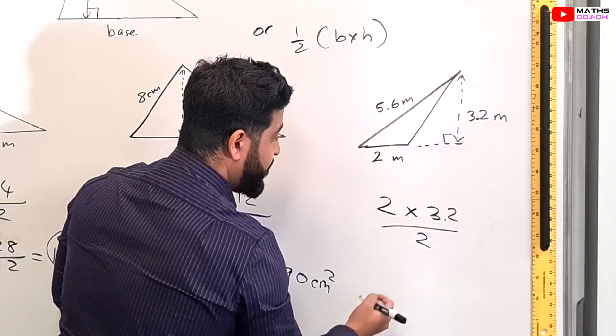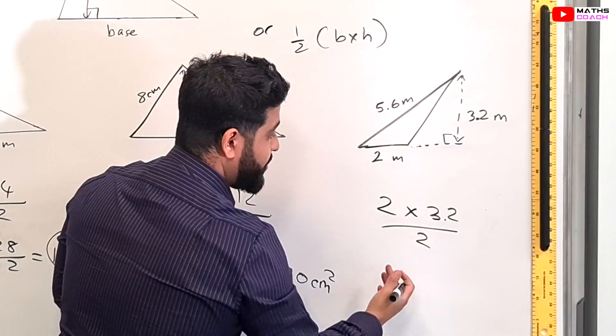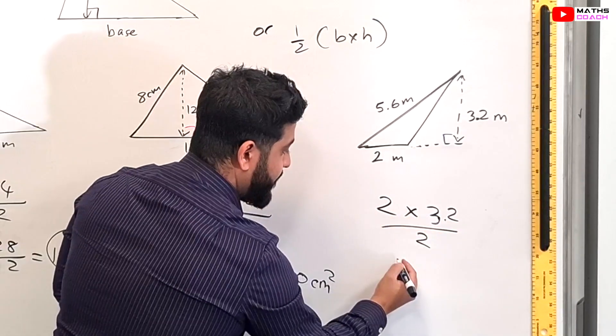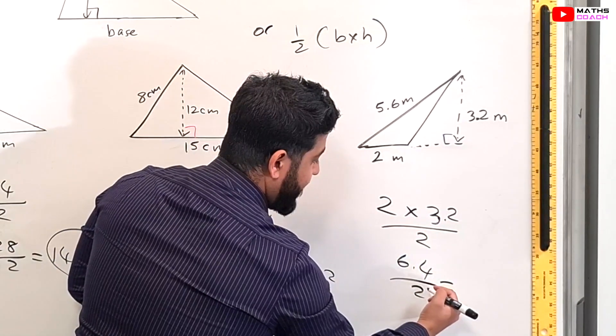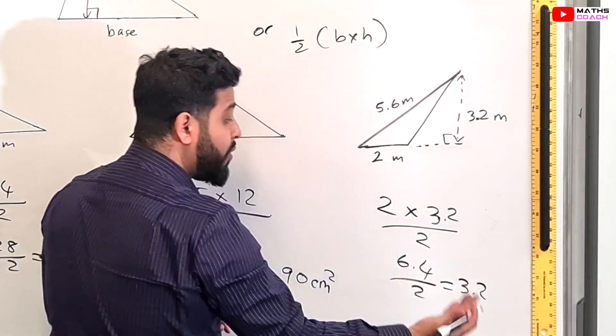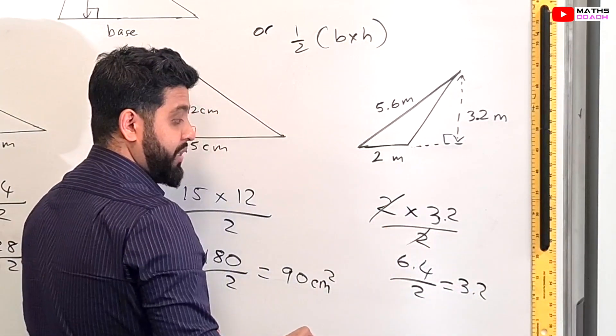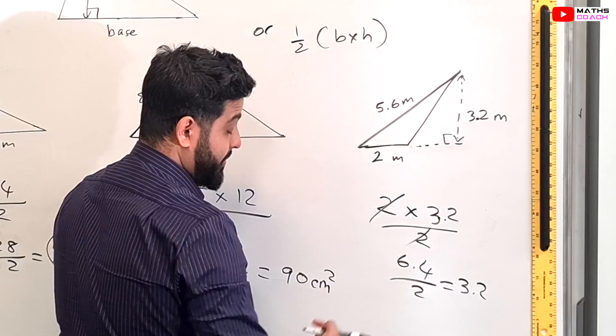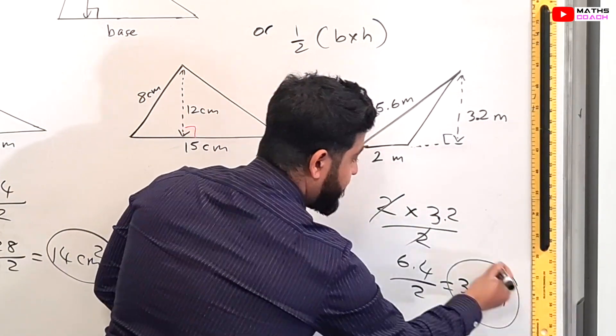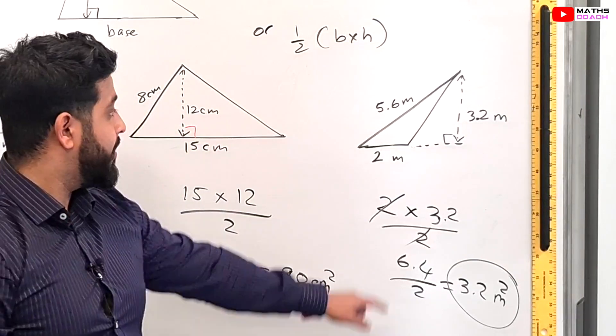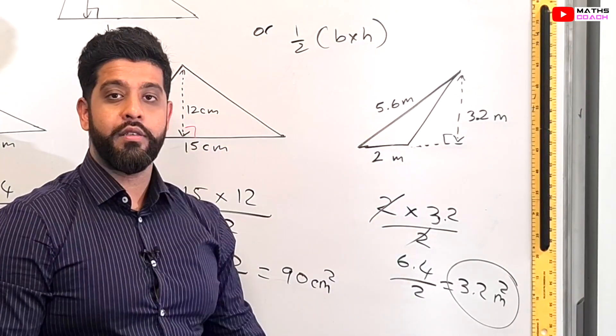2 times 3.2 you can use a calculator but you should be able to do this in your head as well. So 2 times 3.2 is 6.4 and 6.4 divided by 2 is 3.2. What we could have also done is cancel these 2's down and that would have just been left with 3.2. So 3.2 meters squared is our answer for the area of this triangle.